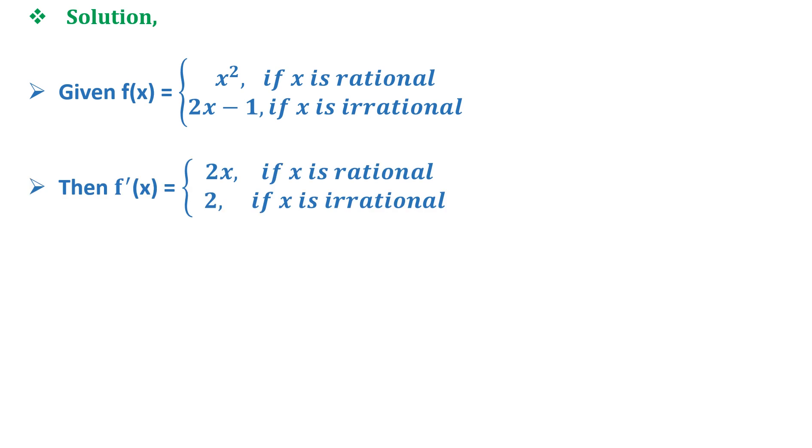Now let us solve the question. It is given that f(x) = x² if x is rational and 2x - 1 if x is irrational, which gives us that f'(x) = 2x if x is rational and 2 if x is irrational.